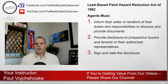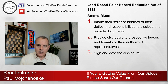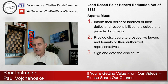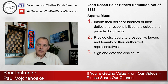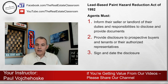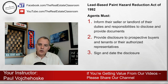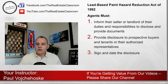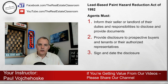What are the agent's duties and responsibilities under the law? Number one: the agent — whether listing agent, buyer's agent, or property manager representing an owner — must inform the seller or landlord of their duties and responsibilities to disclose and provide documentation. They have to tell the seller that if they have reports, they must make them available to the buyer, and inform the owner that any documentation must be provided to the tenant. Number two: provide disclosure to prospective buyers and tenants or their authorized representatives — both the documentation and the actual lead-based paint disclosures. Number three: agents involved in the transaction must also sign and date the disclosures.